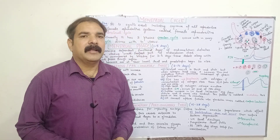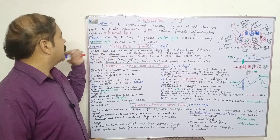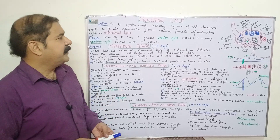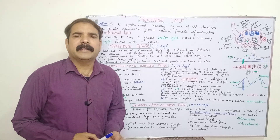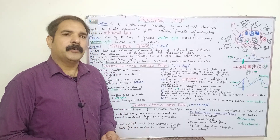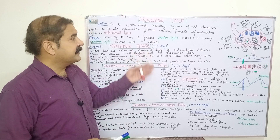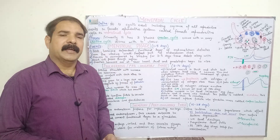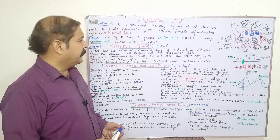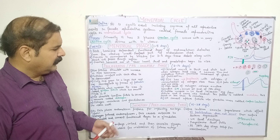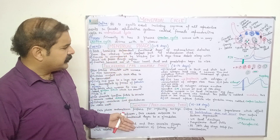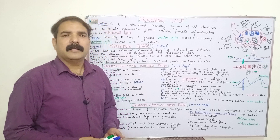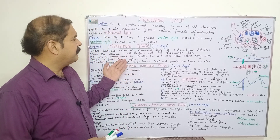The menstrual cycle is a cyclic event including a sequence of all reproductive events in the female reproductive system, also called the female reproductive cycle. We can divide the whole cycle into two major phases: the ovarian cycle, which occurs within the ovary, and the uterine cycle, which occurs within the uterus.